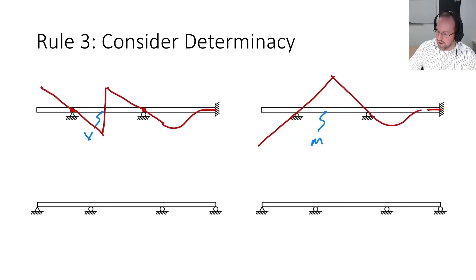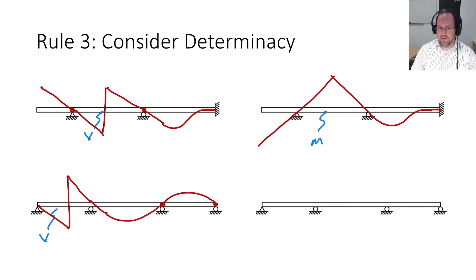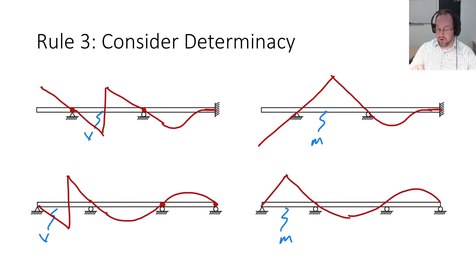Similarly for moment in an indeterminate system, I'll have a peak at that location, but in order to come back to zero slope and zero displacement it's going to have to bend back to get there. For multi-span systems, the influence line alternates back and forth. For shear in an end span, after satisfying the supports the diagram bends down, then back up, then back down in an S-shaped pattern. For moment in an end span there's a peak, then it alternates down and up — continuing to alternate through further spans.